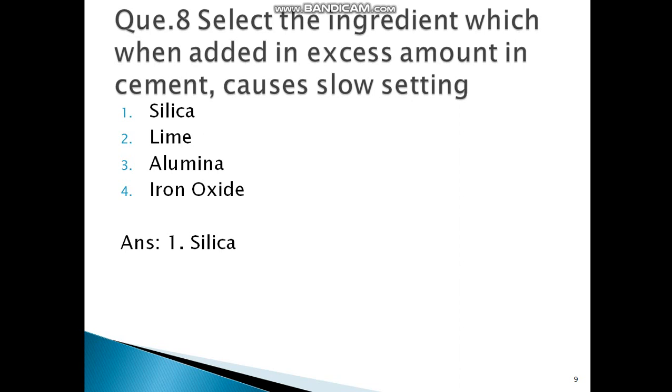Silica is going to cause the slow setting of the cement. Rest of the ingredients like alumina causes the initial setting easily. Lime also sets, but silica sets slowly. So option 1 is correct for this question.